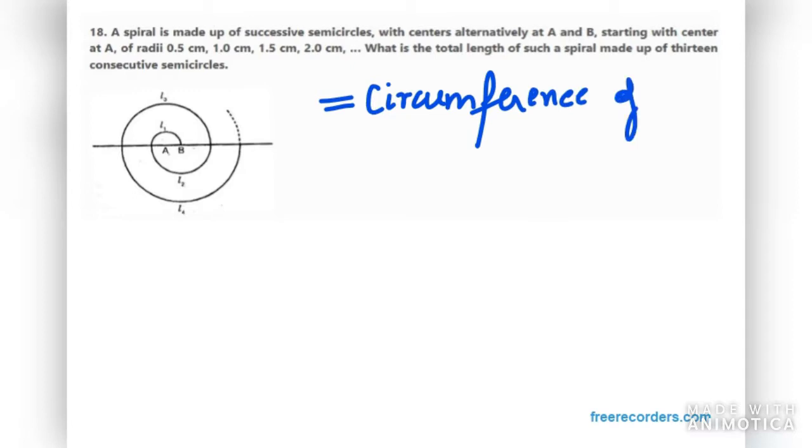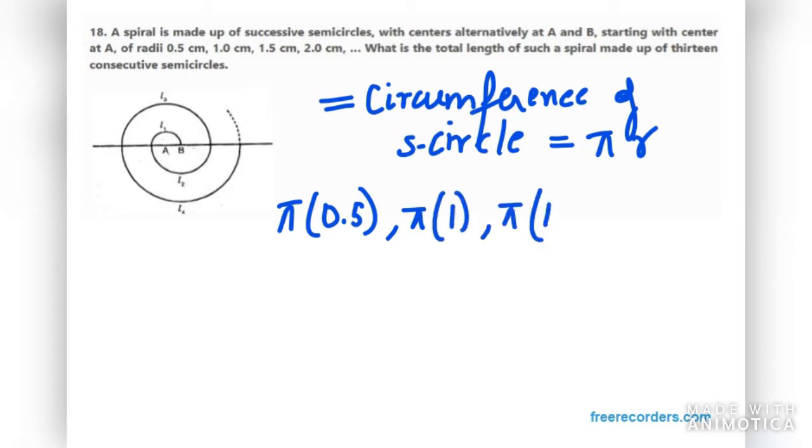So circumference of semicircle is π times r. Now the radius one is 0.5, that means now we need to construct an AP from this. So π times 0.5, π times 1, then π times 1.5, then π times 2, and so on till the 13th consecutive semicircle.